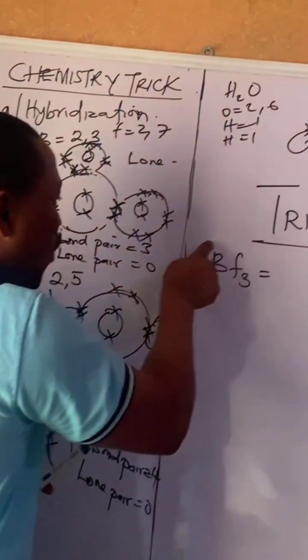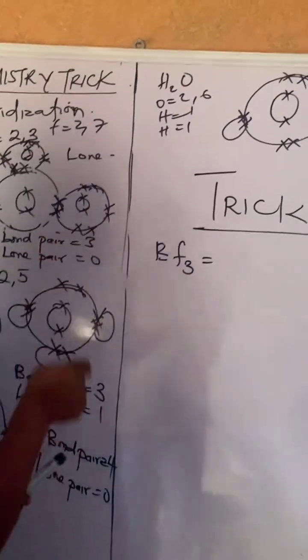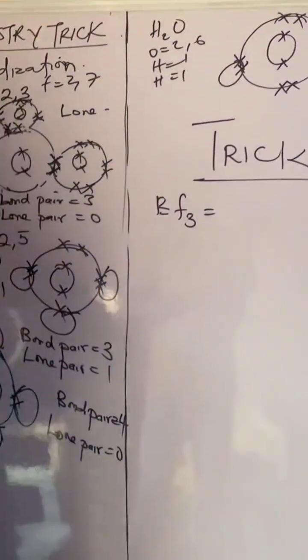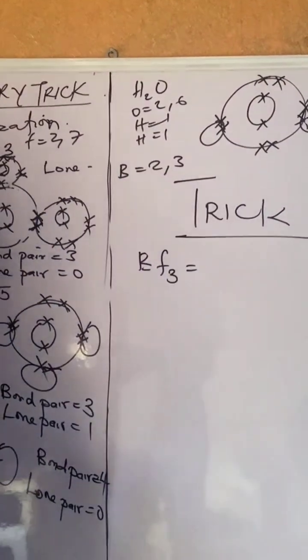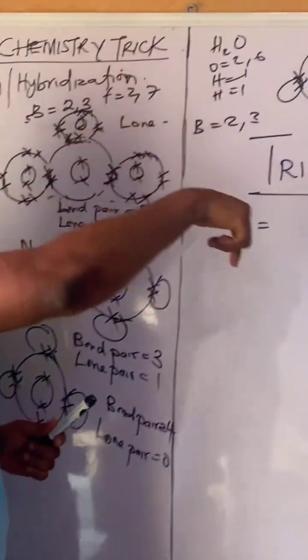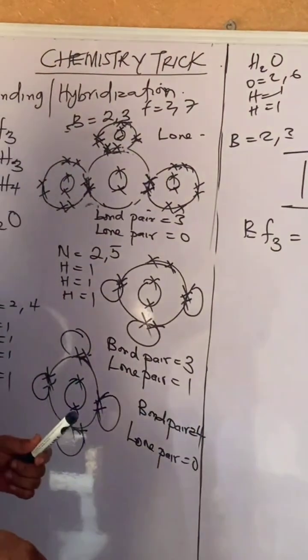The first thing I will do is, what is the group number of boron? I can get that from what I have done. Boron is 2, 3. So the valence electron is going to be 3. That means the group number will be 3 from periodic table experience.